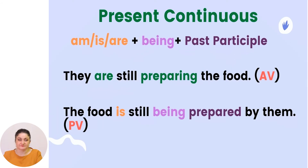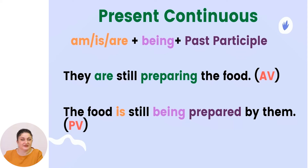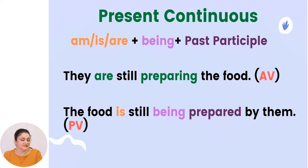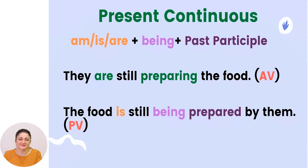Present continuous. To change present continuous from active voice into passive voice, you need to use the verb 'to be' in the present tense plus 'being' plus the past participle of the verb. Example: 'They are still preparing the food.' becomes 'The food is still being prepared by them.' So the food suffers the cooking or the preparing activity.